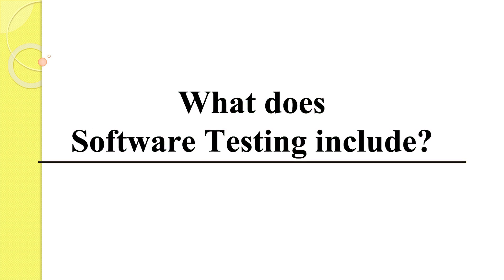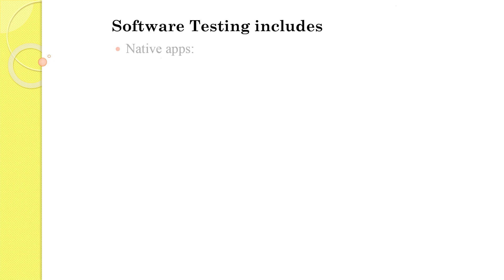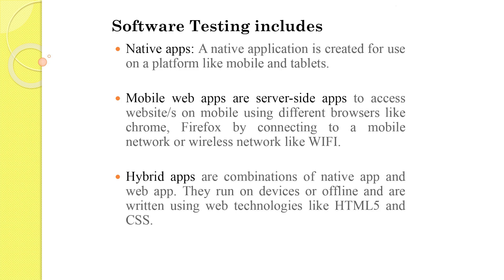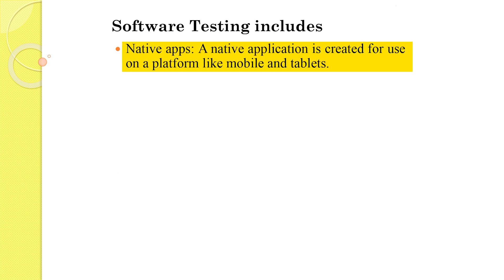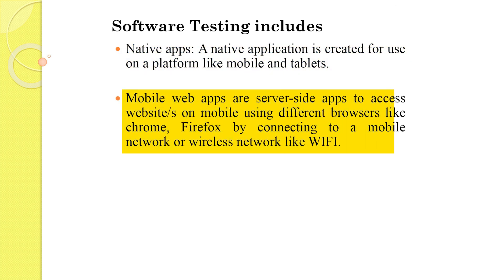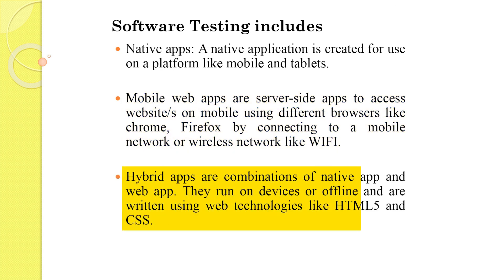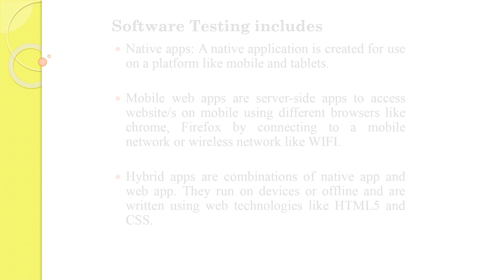If you are actually doing mobile app testing, it includes native app testing, mobile or server-side app testing, and hybrid app testing. A native app is created to be used on a platform like mobile or tablet. Mobile or server-side apps are created to be used in different browsers like Chrome or Firefox on mobile phones. A hybrid app is the combination of both native and web apps.